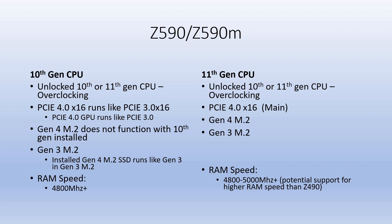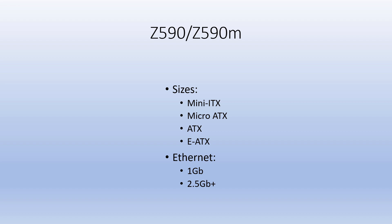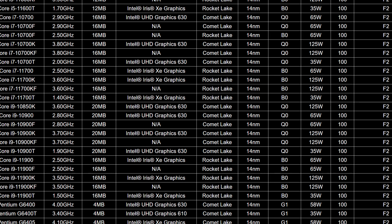With Z590 and 11th gen the RAM speed is actually higher than stated — I believe up to 5333 MHz depending on the motherboard. For example, the Z590 Gaming X reportedly handles 5333 MHz. Form factors are the same as Z490. Some Z590 boards reportedly support 5 Gigabit and 10 Gigabit Ethernet if you need that. That's all I had — thanks for checking out the video, please like and subscribe.